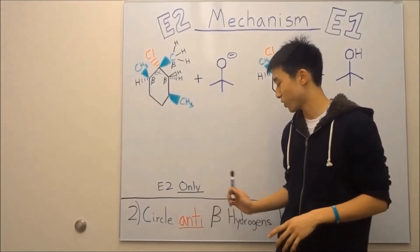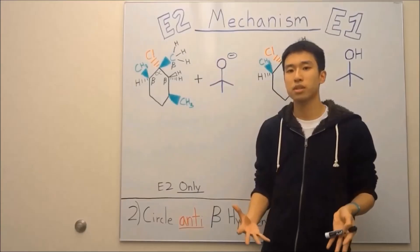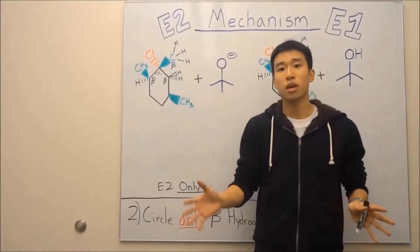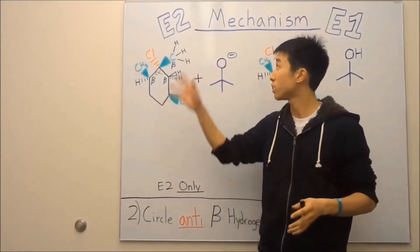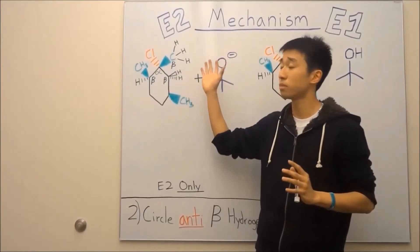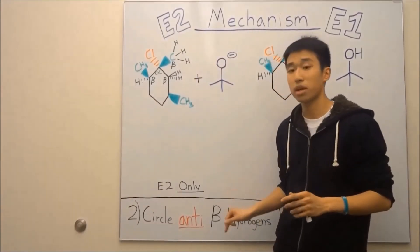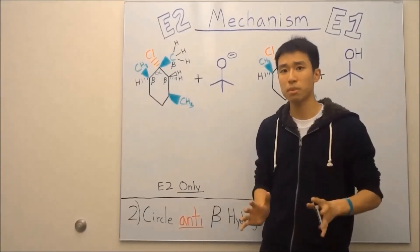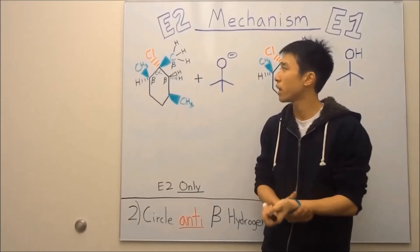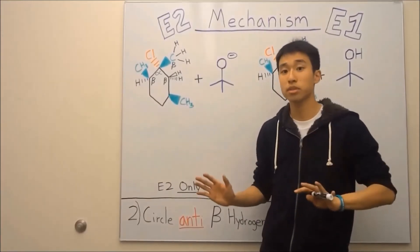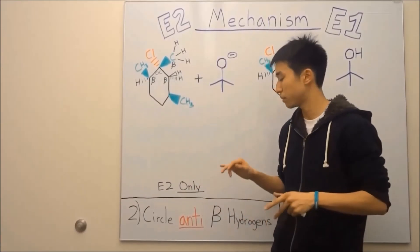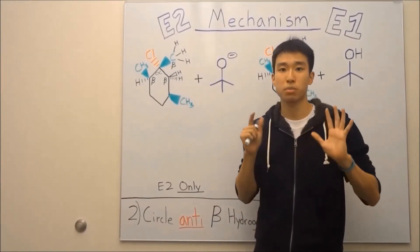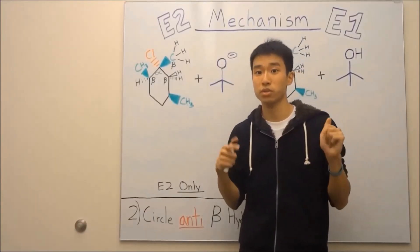The next step is to circle your anti-beta hydrogens. Different professors teach E2 elimination differently. My professors taught that E2 elimination can only occur at the anti-beta hydrogens — it's just more stable and faster. But I've read online that some people say syn elimination can also occur, so that all depends on your professor. Make sure you double check your notes.